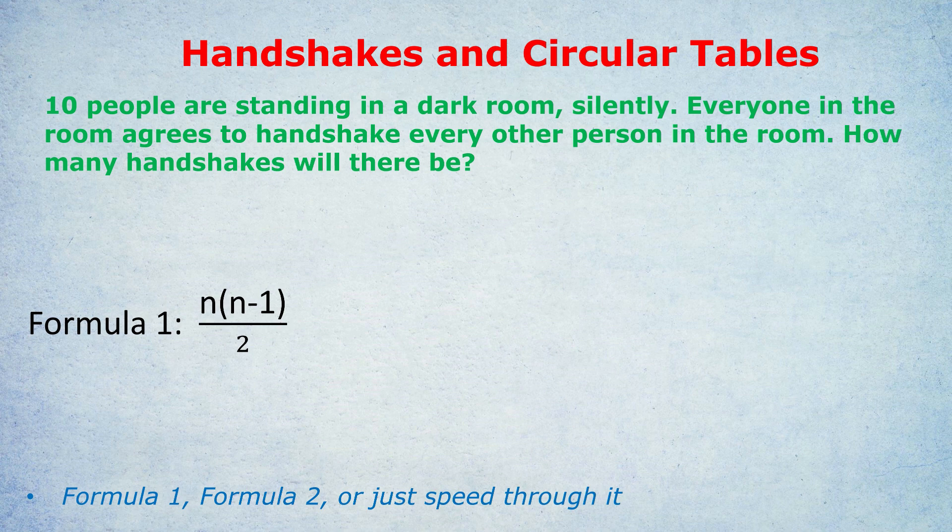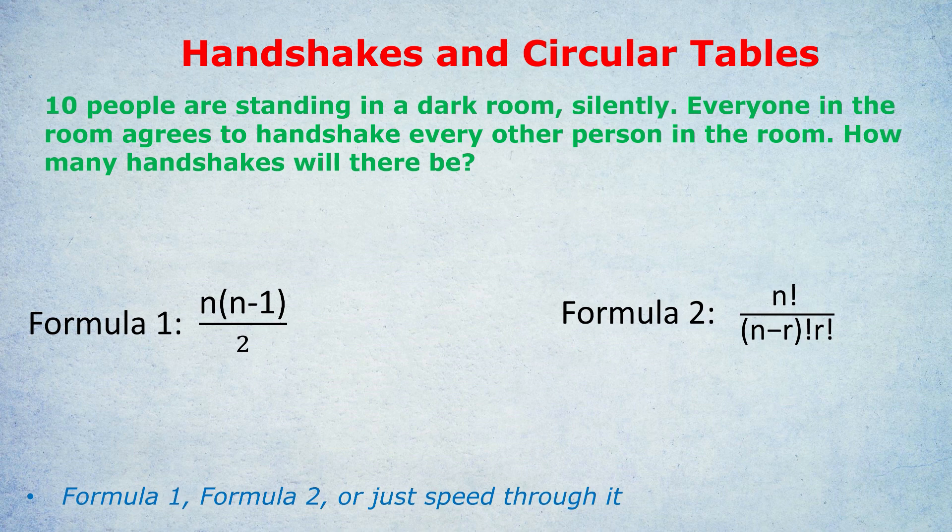Some of you will react to that formula going, yes, Philip has given me another crucial bit of information. Other people will react, oh no, why is there a new formula? Why can't I just use my existing methods? For those people I'd say, yes, we can use our existing methods. If you know combinations, you can use that. If you do know the combinations formula, you'll know it looks like this: n factorial over n minus r factorial times r factorial.